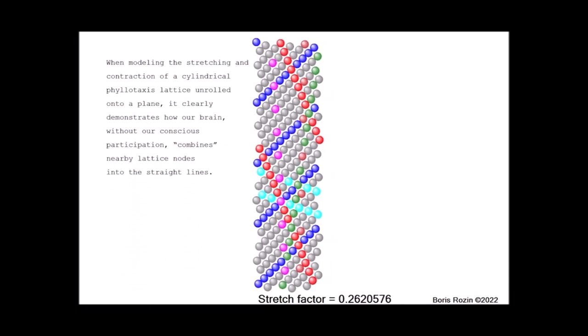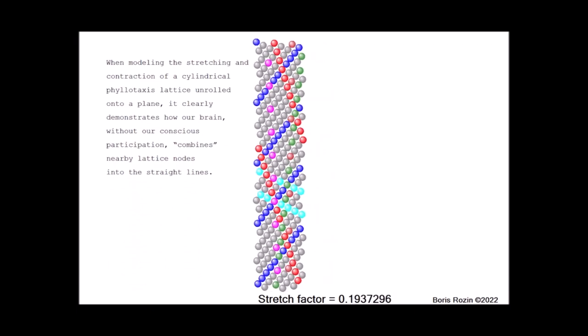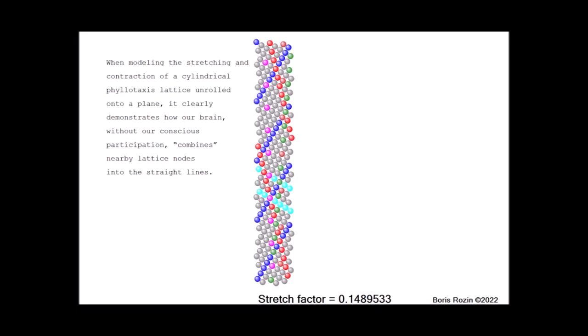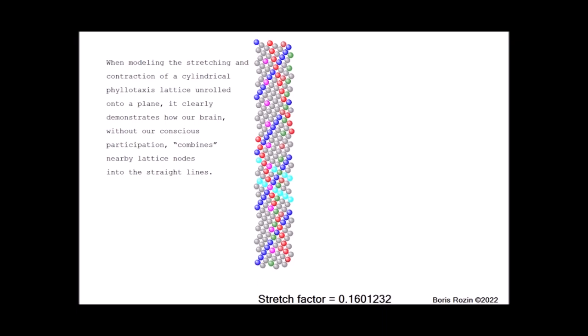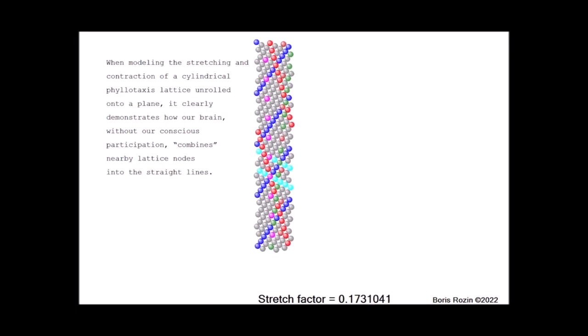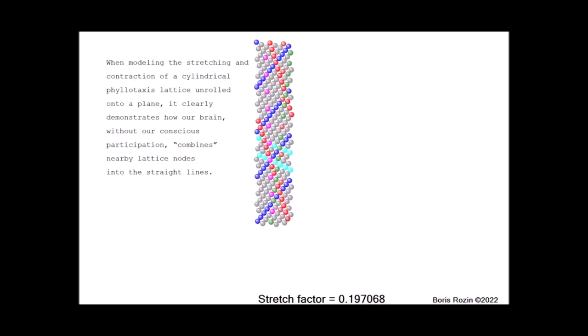When modeling and stretching the contraction of a cylindrical phyllotaxis lattice unrolled onto a plane, it clearly demonstrates how our brain, with our conscious participation, combines nearby lattice nodes into straight lines.